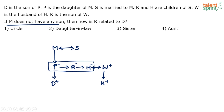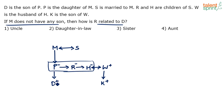How is R related to D? D's mother is P, and P's sister is R. So R is D's mother's sister. Your mother's sister is your aunt, so R is the aunt of D. Option 4 is the answer.